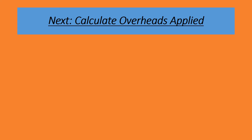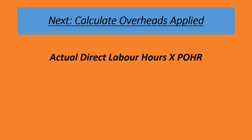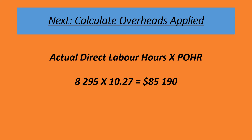Next, we calculate the overheads applied. Actual direct labor hours multiplied by the POHR gives us the overhead applied. In our case, that is 8,295 multiplied by $10.27, which gives us $85,190 as the overhead applied.